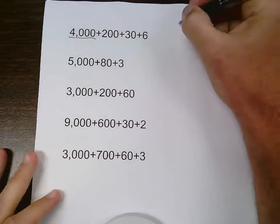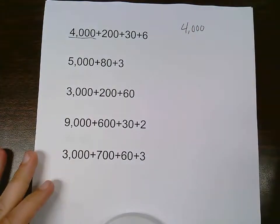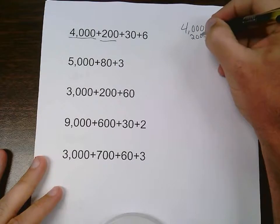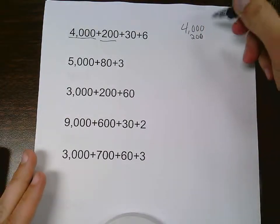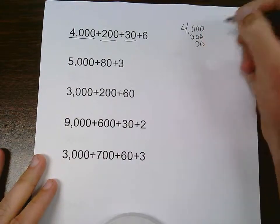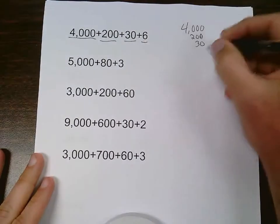So I start with the largest number that I have there, 4,000. And then I add the next largest onto it, 200. Once again, making sure that the place values are lined up. Next biggest one, 30. Ones with ones, tens with tens, hundreds with hundreds. And smallest, 6.